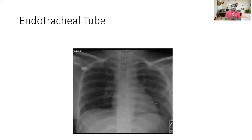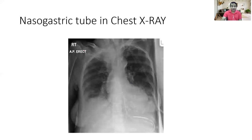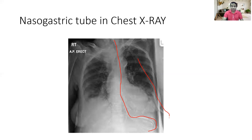After knowing the technicalities, you have to look for tubes and artifacts. In this case X-ray, you can see a radio-opacity — this is the endotracheal tube. You can also see chest electrodes. If you see thin line shadows, these are probably CVP lines. If you follow another tube, you can trace a nasogastric tube. There is also another tube visible here — this is probably the tube for the oxygen mask. These are the things you need to identify before proceeding with interpretation.